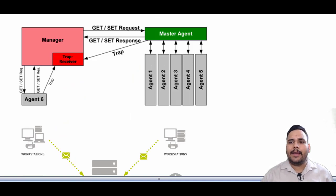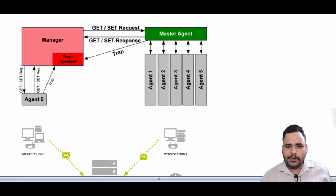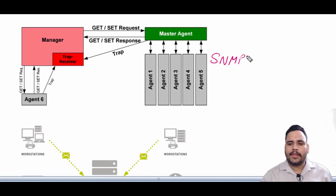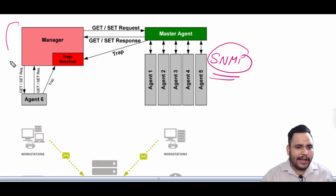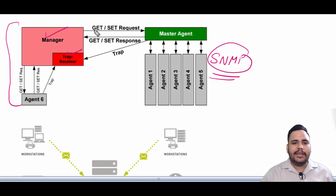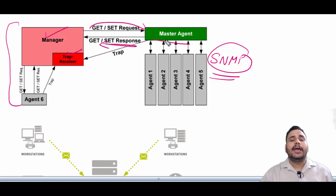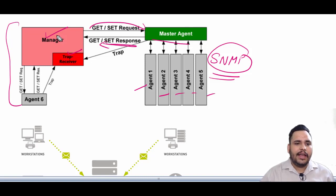Now, what is SNMP? SNMP is Simple Network Management Protocol. As you can see in this diagram, there is a manager and trap receivers. They are sending get and set requests and receiving set responses from a master agent, with agents one through five connected to that master agent.